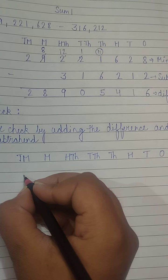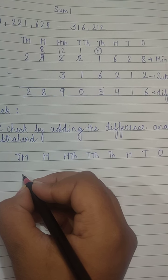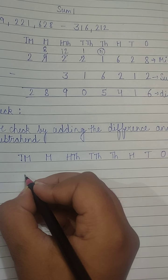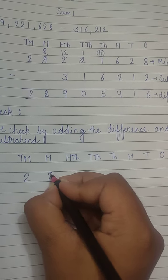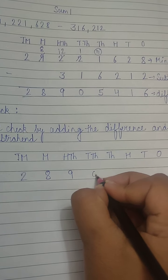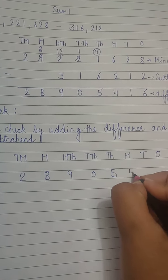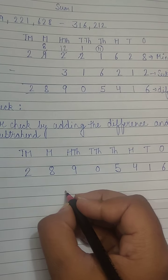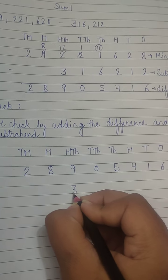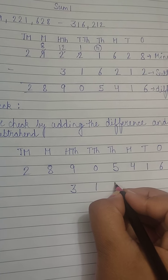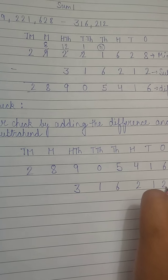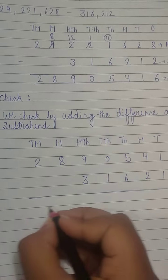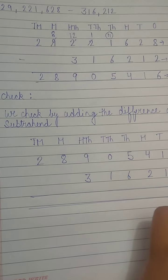We will write the difference or the subtrahend first — it is our choice because in addition order does not matter. So I will write the difference: 2, 8, 9, 0, 5, 4, 1, 6. And the subtrahend is three hundred thousand, three hundred, sixteen thousand, two hundred twelve. Now we will add them and see if the answer we get is the minuend.